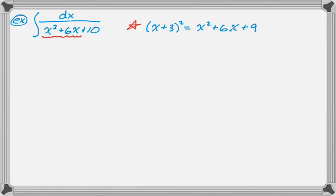So what I'm going to do here is I'm actually going to look at this part is already matched up. And then I need a 9, but I already have a 10. So what I can do is I can actually rewrite. So I can do x squared plus 6x.